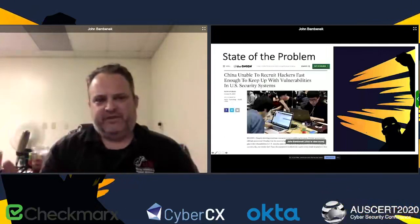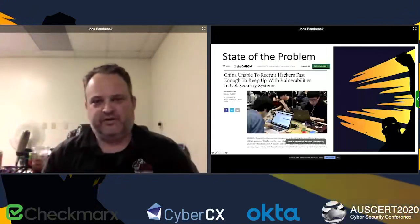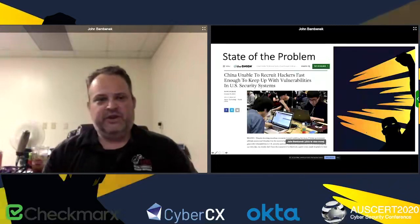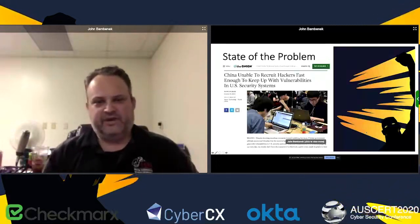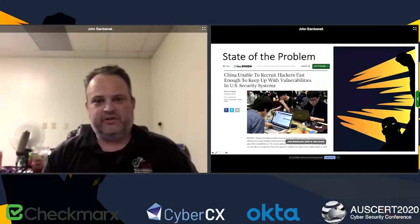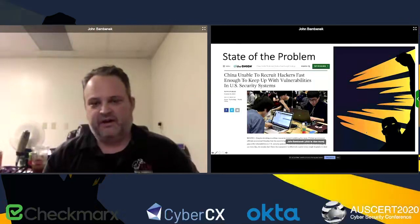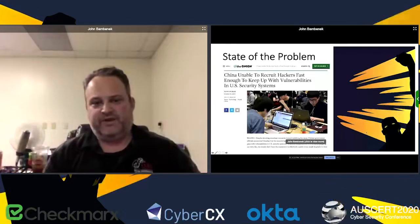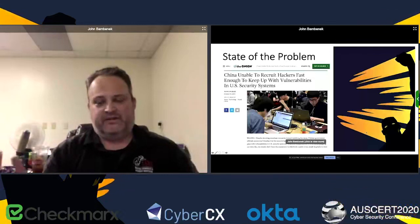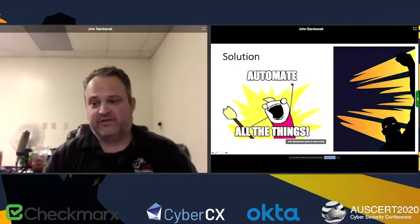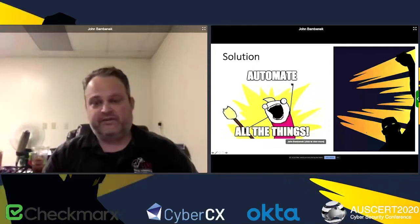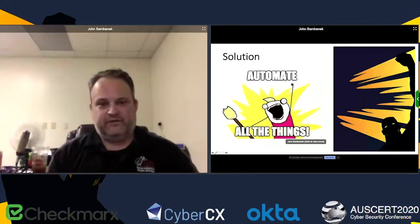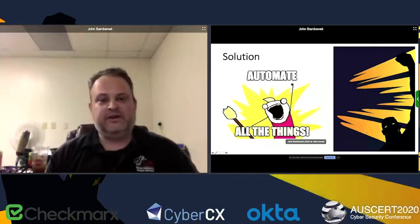Generally, the state of the problem in cybersecurity — this is a tongue-in-cheek Onion article, which is a parody news site from about five years ago, but it still holds true. The vulnerable attack surface of many of our countries is so huge that even the criminals are having a hard time keeping up with it. One way advertised to address the cybersecurity problem is security automation: if computers can automate so many tasks, fewer people will be needed to secure things — which sounds good, with some caveats.